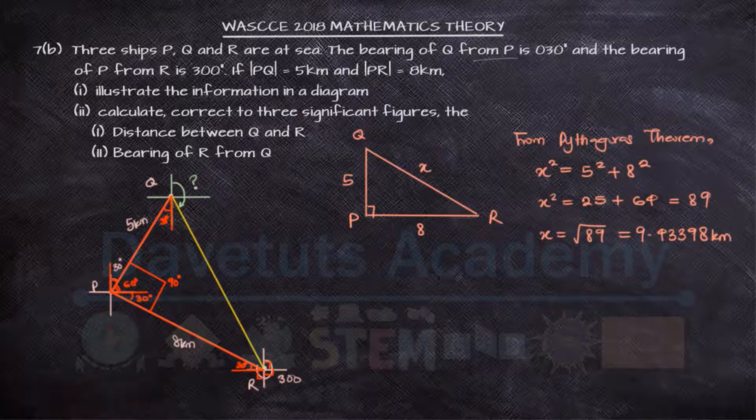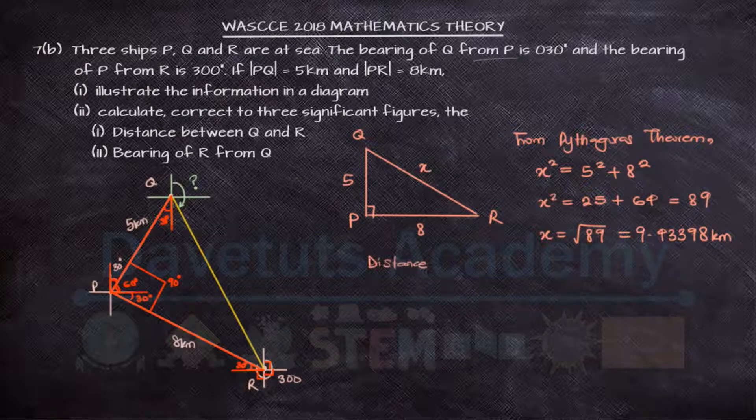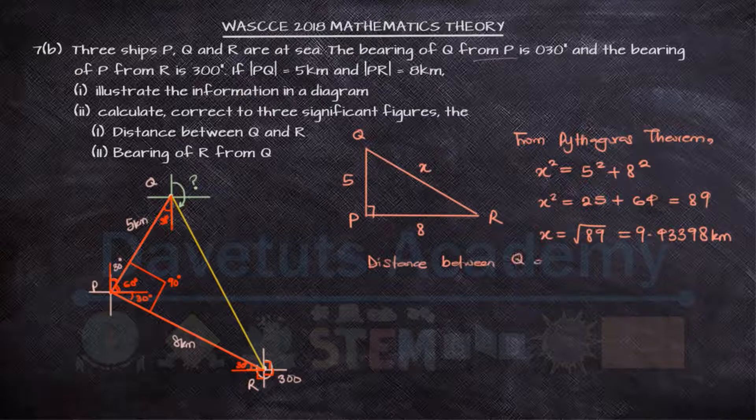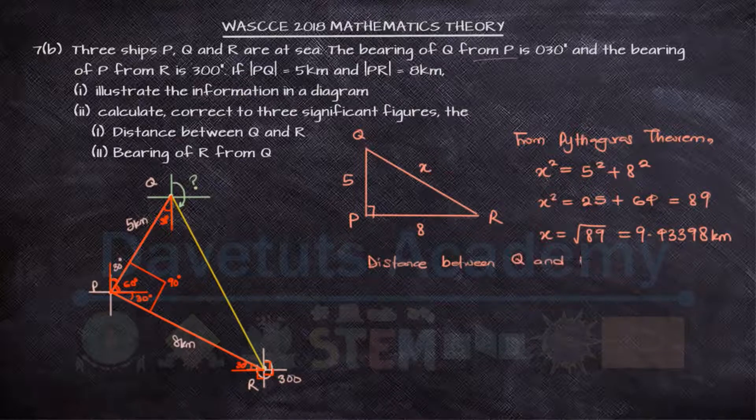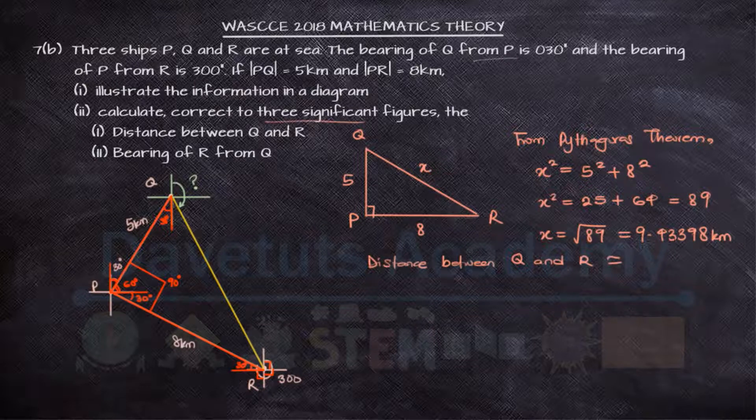We are asked to find this correct to three significant figures, so the distance between ship Q and ship R is approximately equal to 9.43 kilometers in three significant figures.